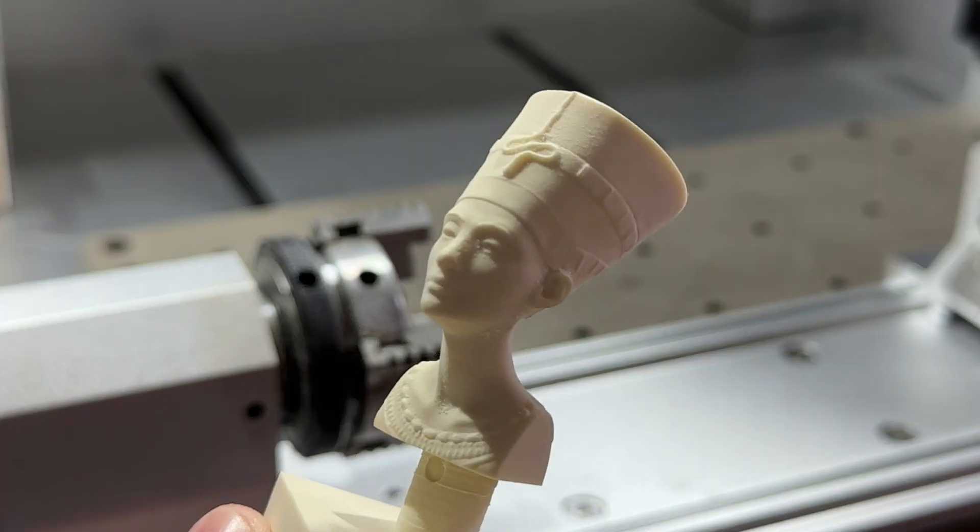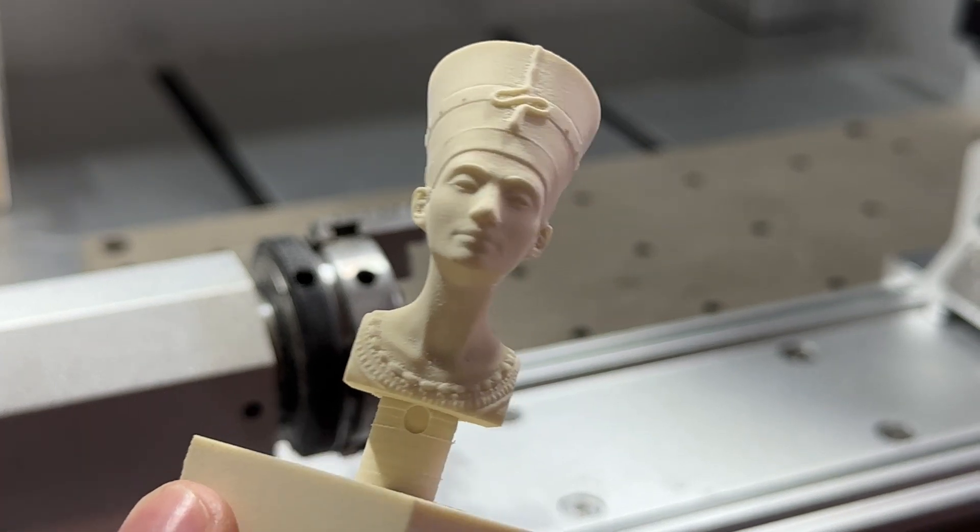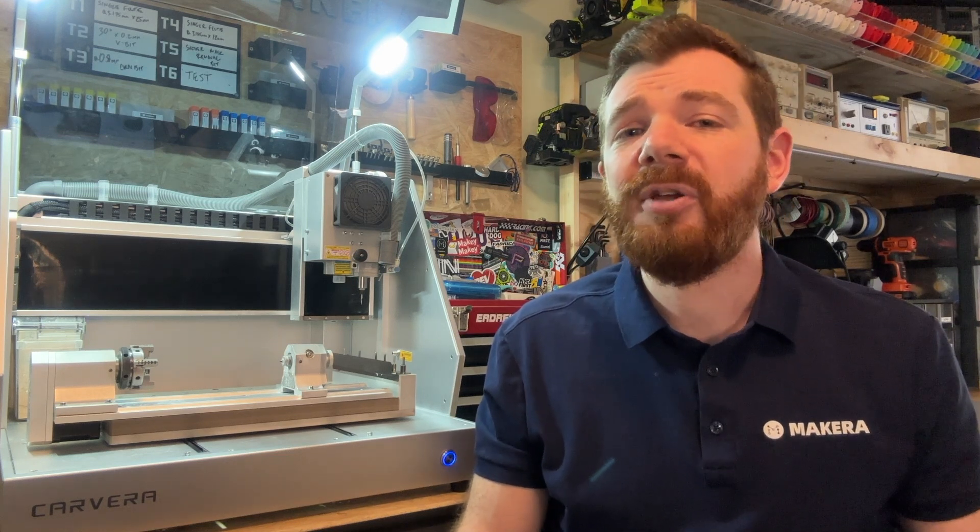And that's all there is to it! By equipping the fourth axis, your manufacturing abilities are vastly expanded as the Carvera can now machine parts with greater versatility. Thanks for watching and of course please don't forget to subscribe and stay tuned for future how-to videos and project posts on the official Makeara channel.